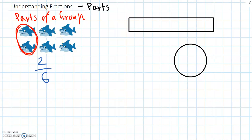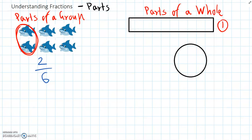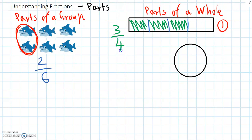The other option we can use a fraction for is to show part of a whole number — parts of a whole. So here we have one whole rectangle, and if we divide that rectangle up into four equal parts and then shade in three of those parts, this fraction is written as three-fourths, or three-quarters. So three parts out of four equal parts.